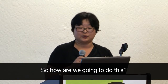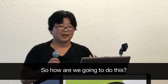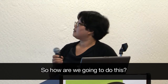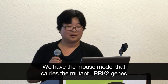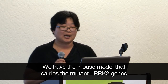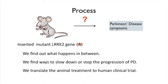So, how are we going to do it? We have the mouse model which carries the muting LAC2 genes. And then this model shows the phenotype. We would like to ask what happens in between. If we find out what happens in between this step, then we can find ways to slow down or to stop the progressing of PD symptoms.